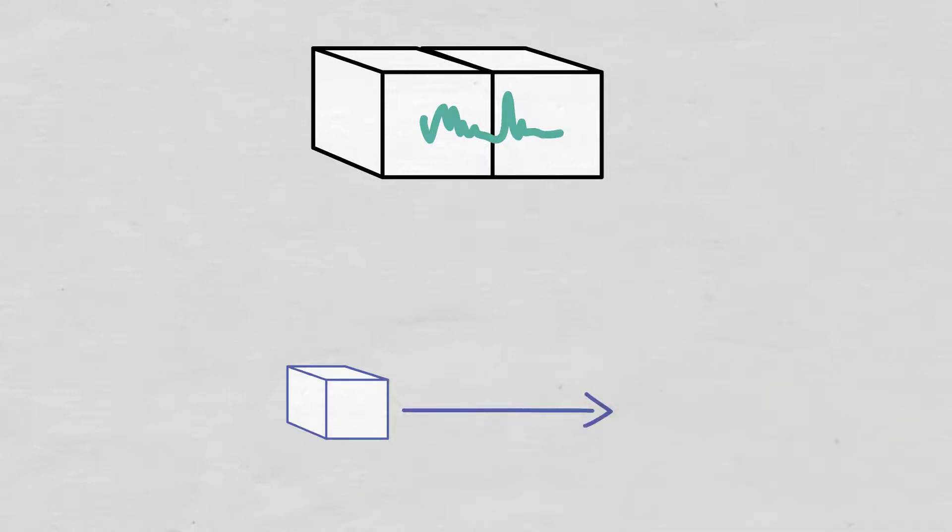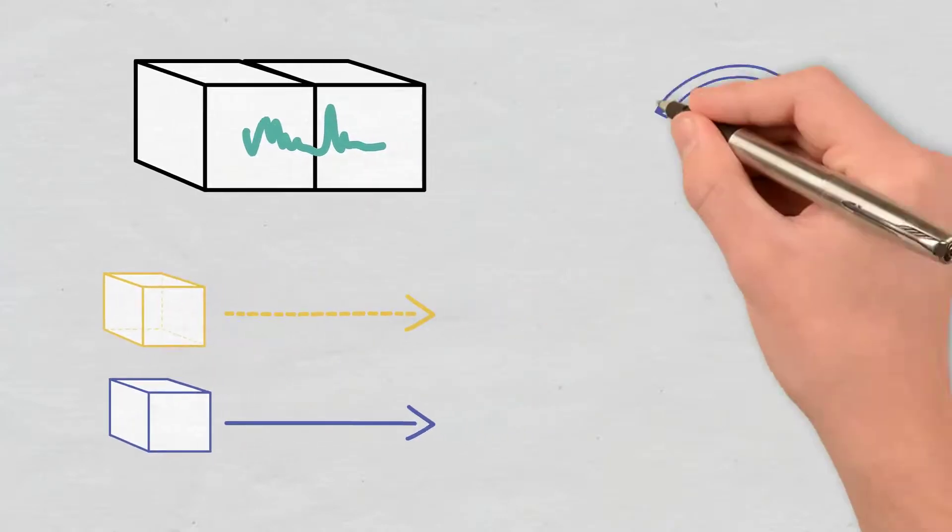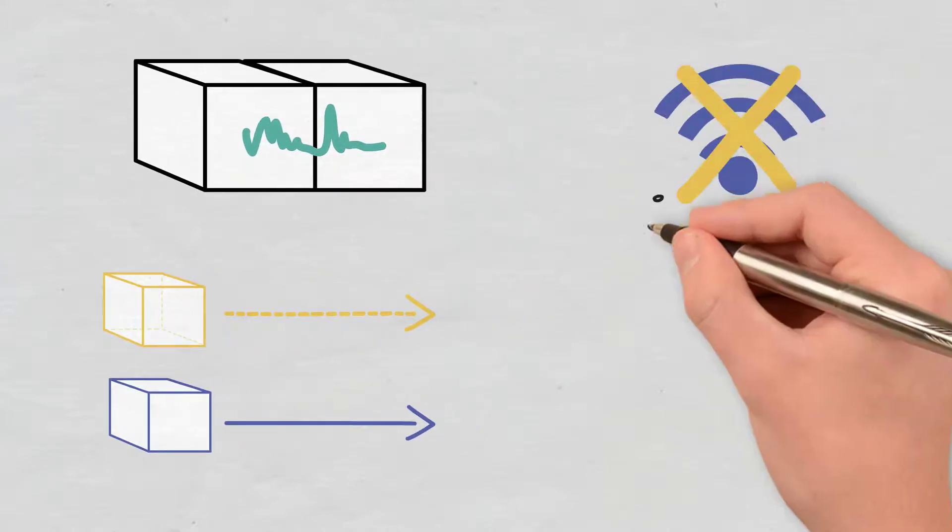Many node operators set up backup nodes that run at the same time as the primary nodes. They do so to keep the network running 24-7 and to prevent downtime.